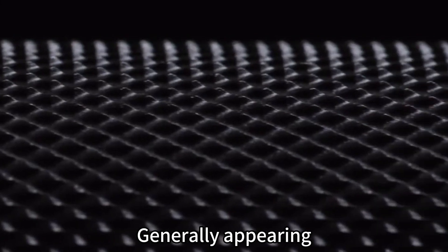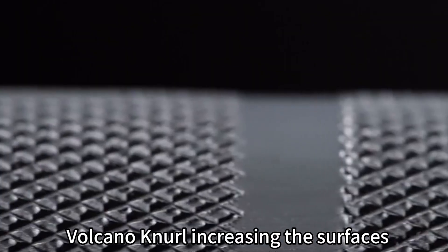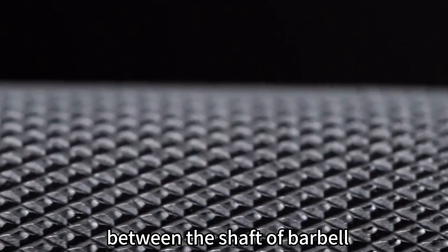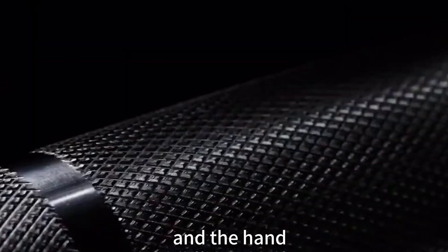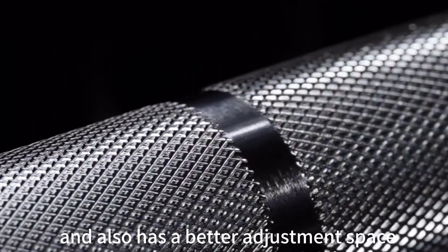Generally appearing in more radical barbell products, Volcano knurl increases the surface contact between the shaft of the barbell and the hand, and also has better adjustment space.